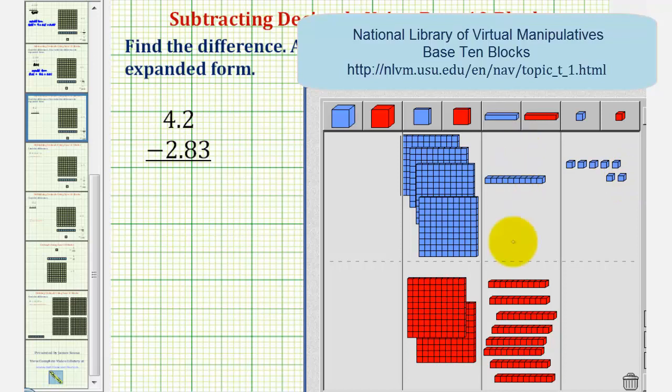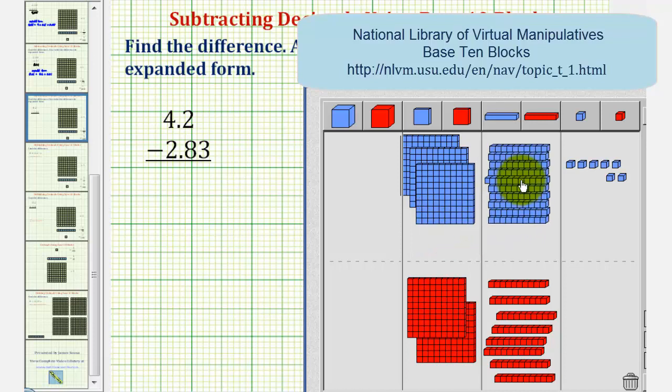And now we'll take a look at the longs, or the tenths place value. We have one long. We're going to remove eight longs. Again, we don't have enough longs to remove eight longs, so we'll perform another exchange. We'll exchange a flat for ten longs. Now we have enough longs to remove nine longs.